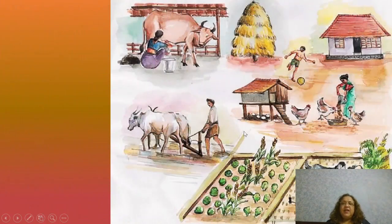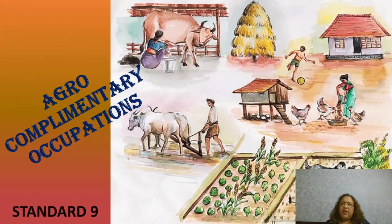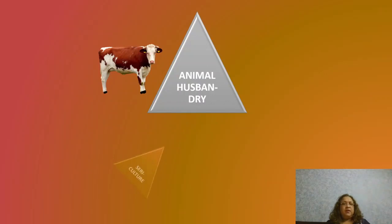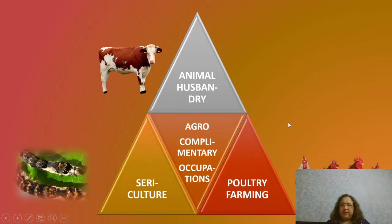Hello students and welcome to a lesson in science 2 where we will learn about agro-complementary occupations. Agro-complementary means related to agriculture. In this video we will be studying about animal husbandry, sericulture and poultry farming.